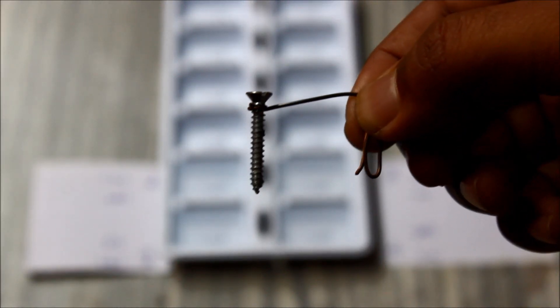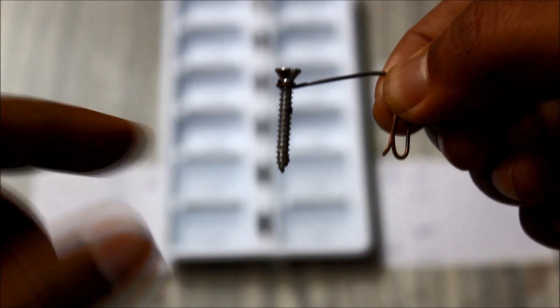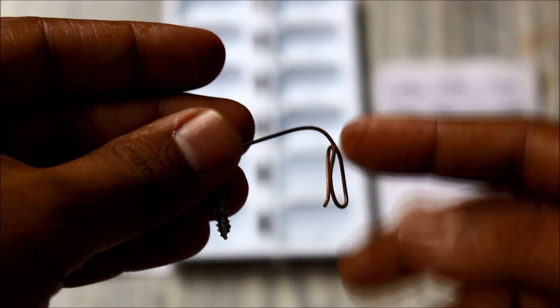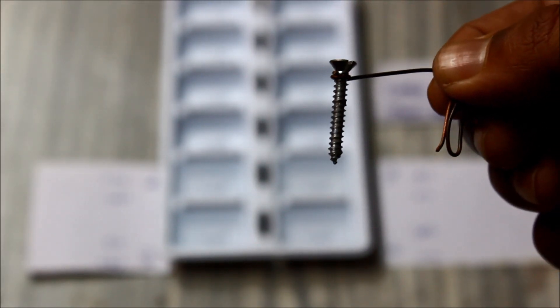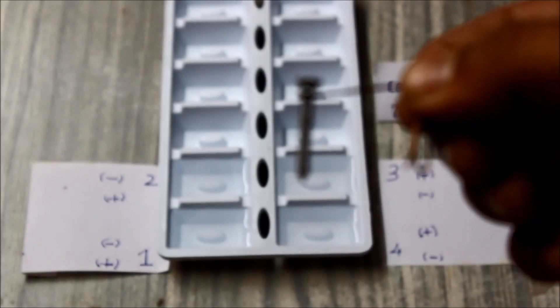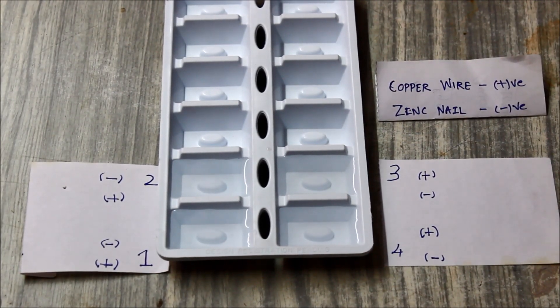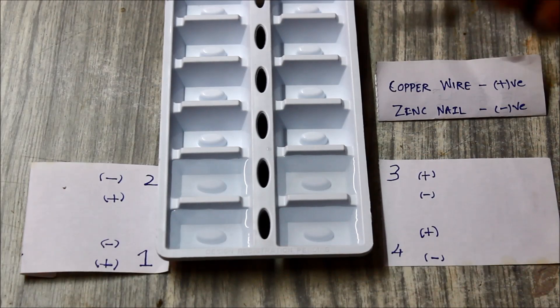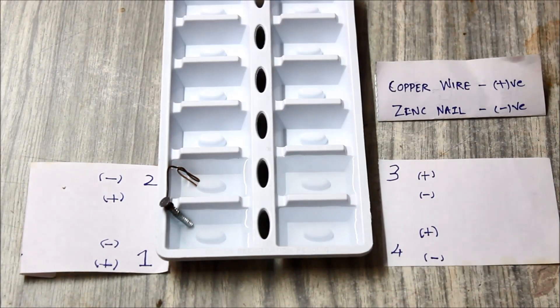Dip the zinc and copper wire—zinc nail is negative and copper is positive. The negative, that is zinc, goes into the first cell and the positive part of it goes into the second cell.